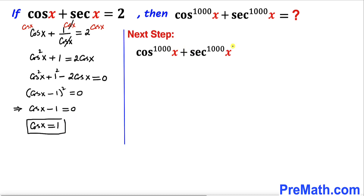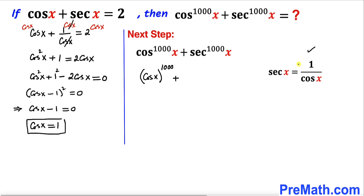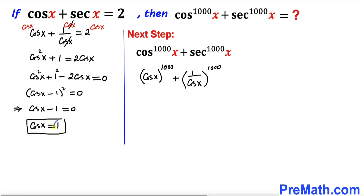Now let's find the value of the expression. The first term can be written as cosine of x whole to the power 1000. Recalling that secant of x equals 1 divided by cosine of x, I replace secant to the power 1000 with 1 divided by cosine of x, whole to the power 1000. Since cosine of x equals 1, I replace cosine of x by 1, giving us 1 to the power 1000 plus 1 divided by 1, whole to the power 1000.